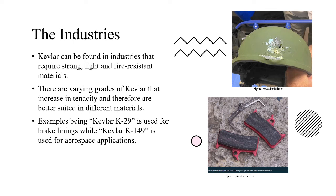Industries have access to a variety of Kevlar grades. Most commonly is Kevlar K29, which is used for a variety of components such as cables, tires, brake linings, and even asbestos replacement. Other grades of Kevlar are used for things such as ballistic armor, formula cars, and aerospace applications. For these purposes, the Kevlar is layered and sealed with resin.